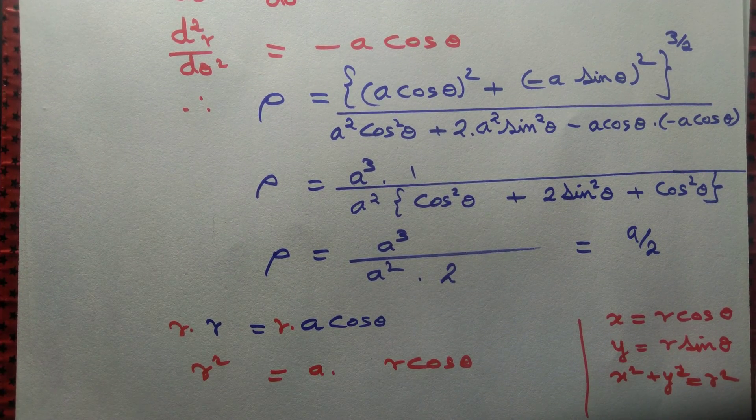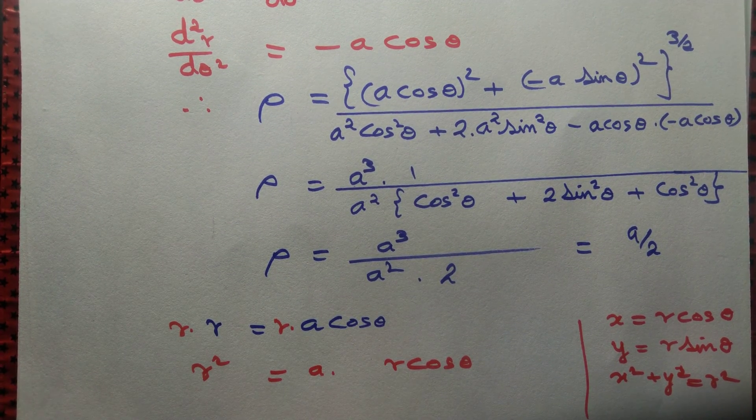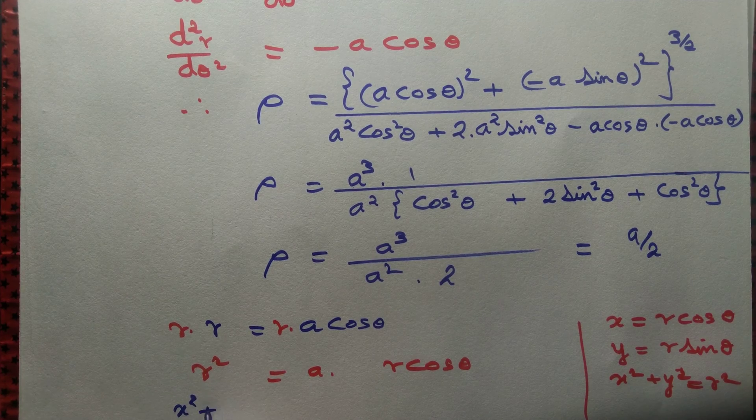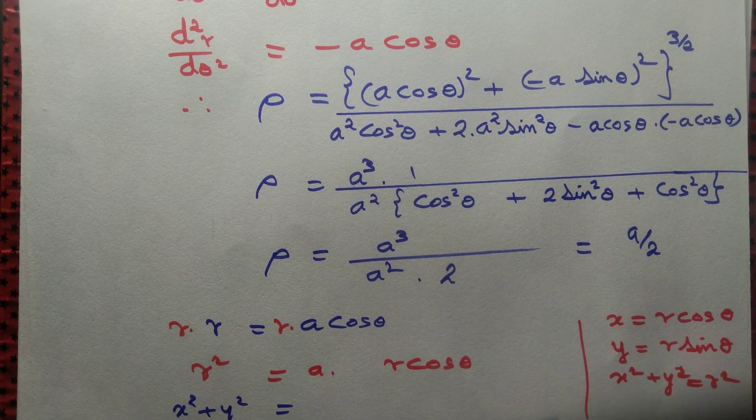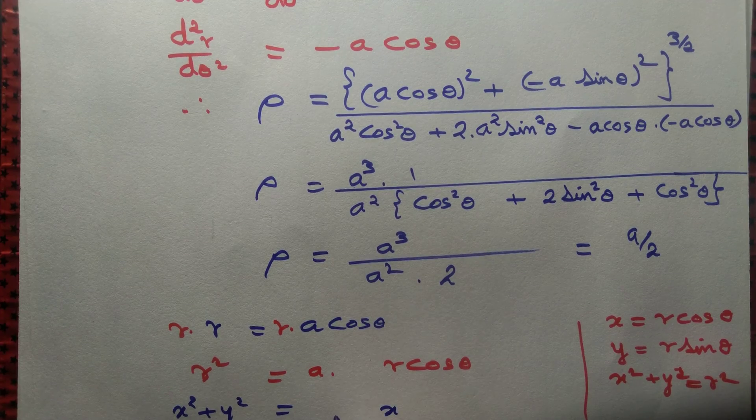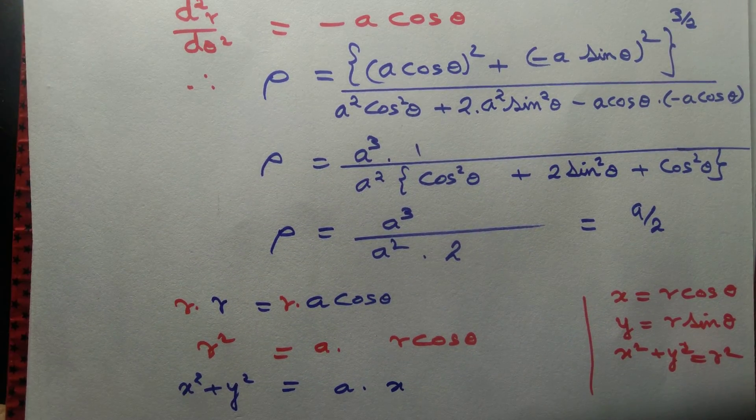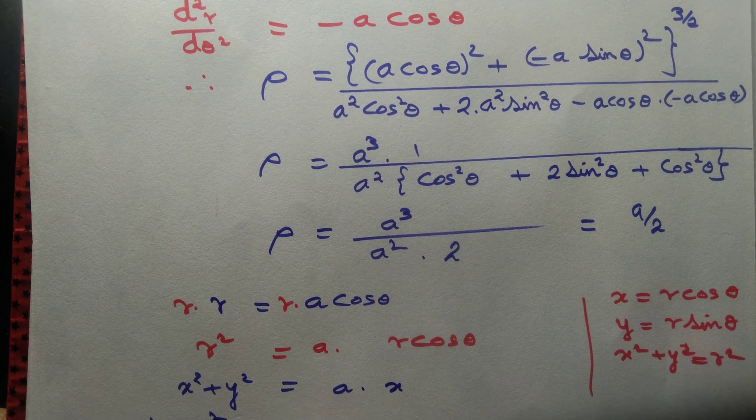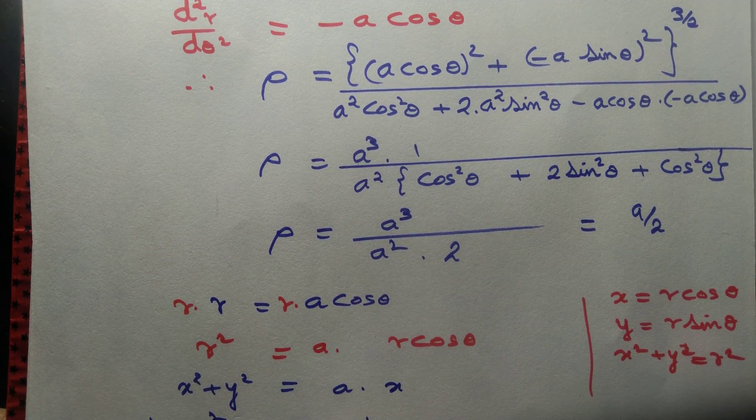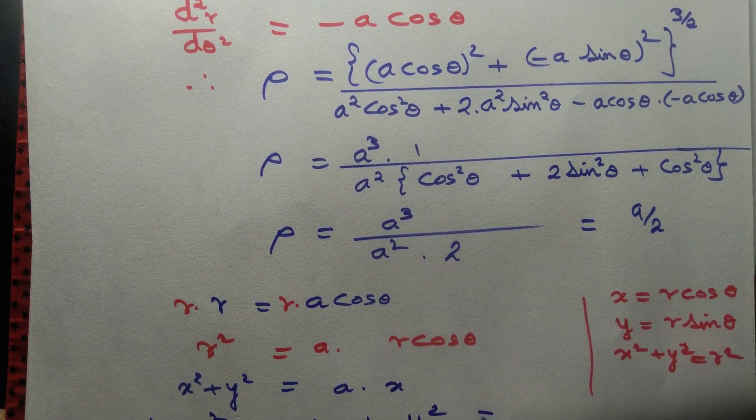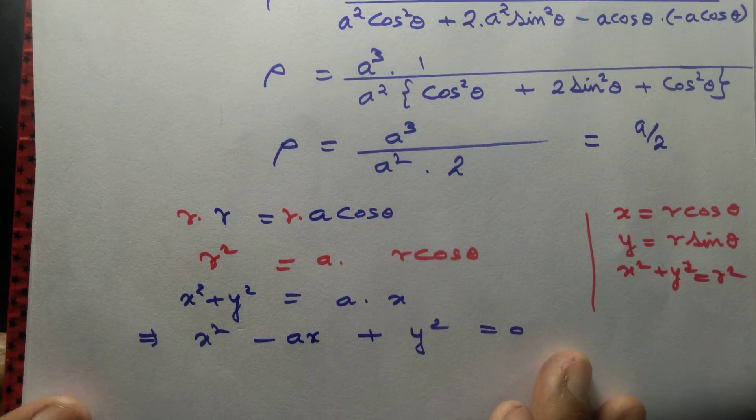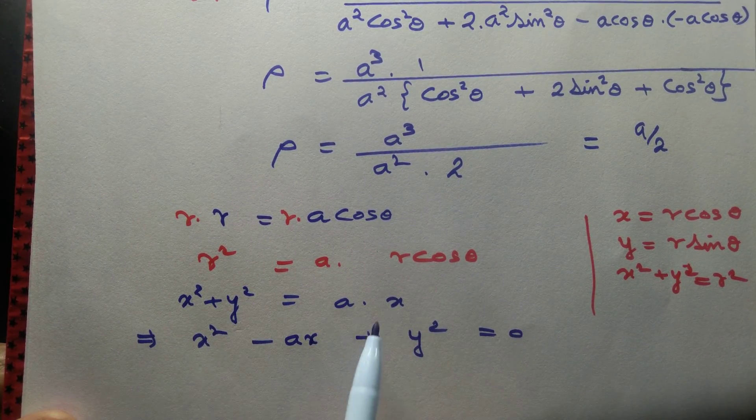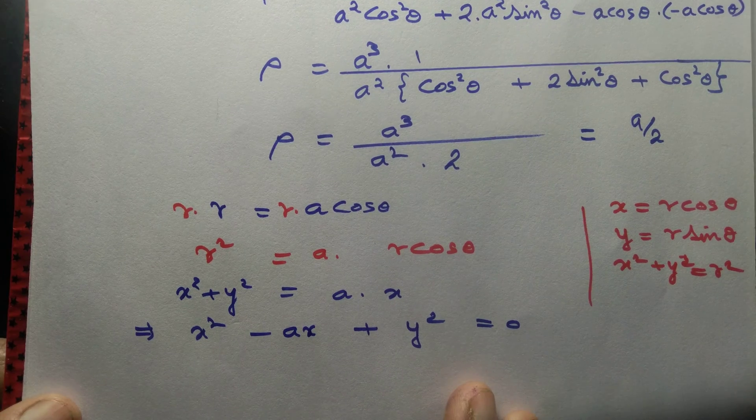So r² can be simply written as x² plus y². And r cos theta can be written as x. So that gives us x² minus ax plus y² equal to 0. We take ax to the left-hand side: x² minus ax plus y² equals 0.